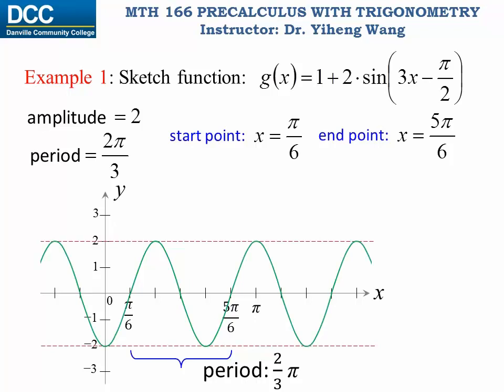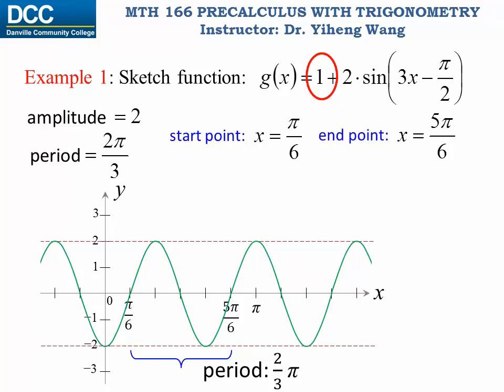Our job is not done yet — there is another coefficient, d, which is easy to handle. This coefficient simply indicates a vertical shift. In this case it is a vertical shift up by one unit, so we move the entire graph up by one unit. Now we complete the graph for the g(x) function.